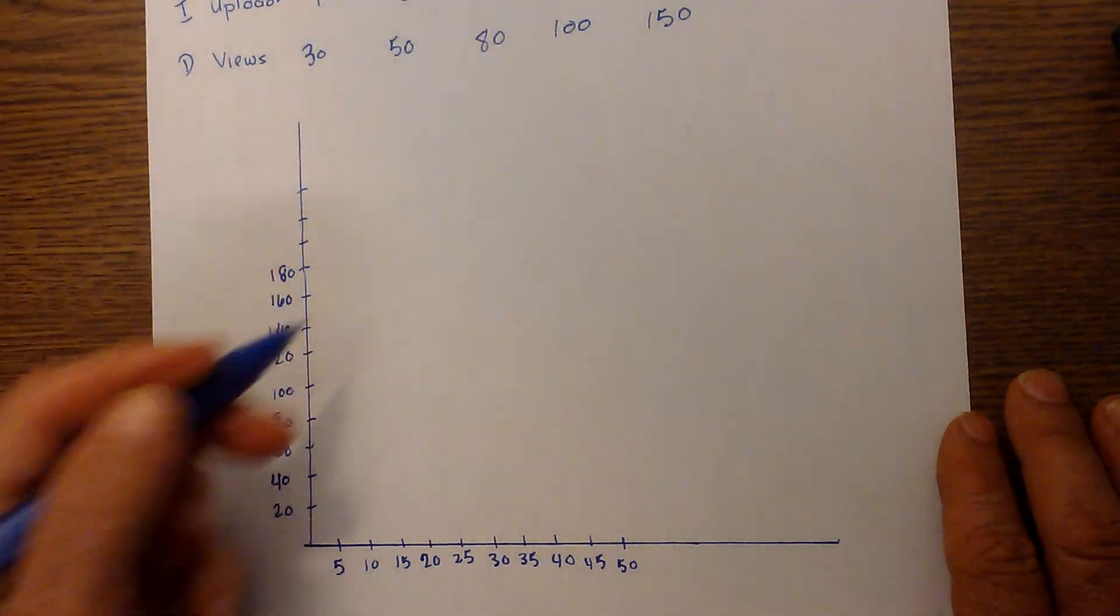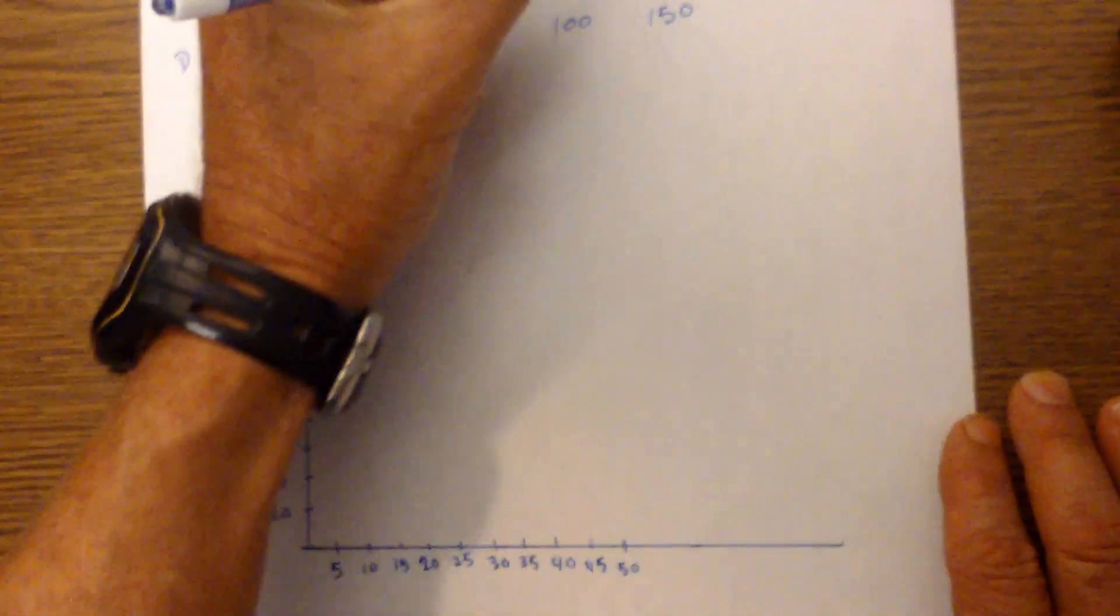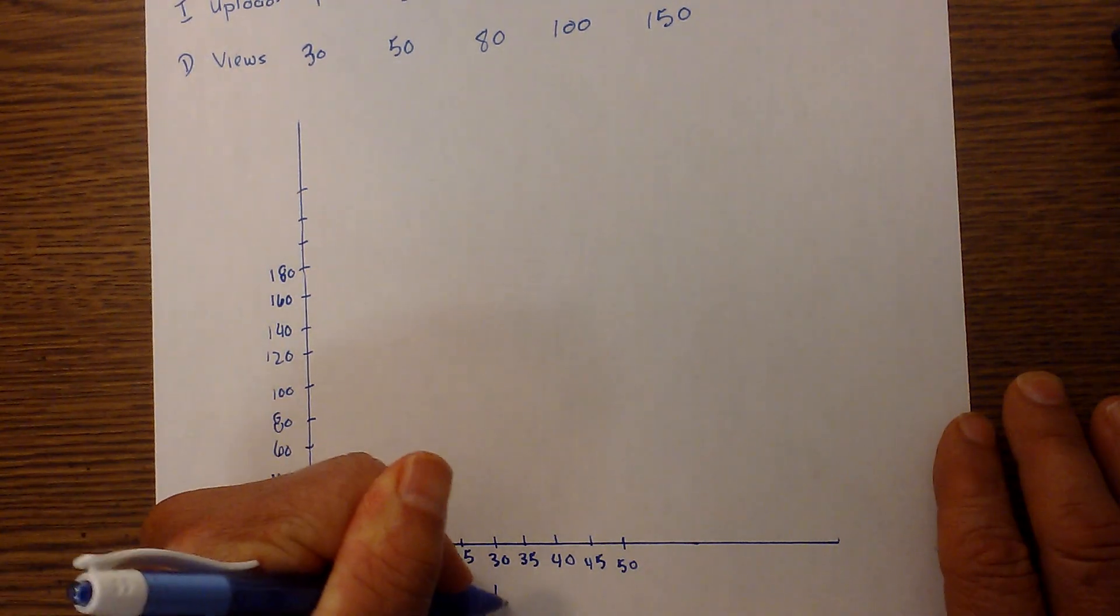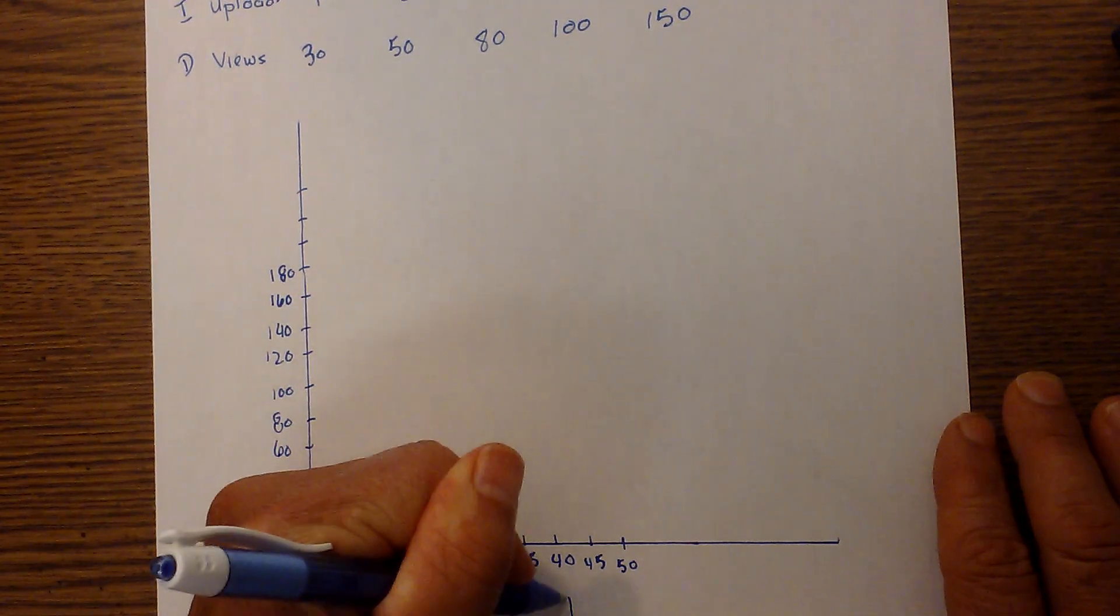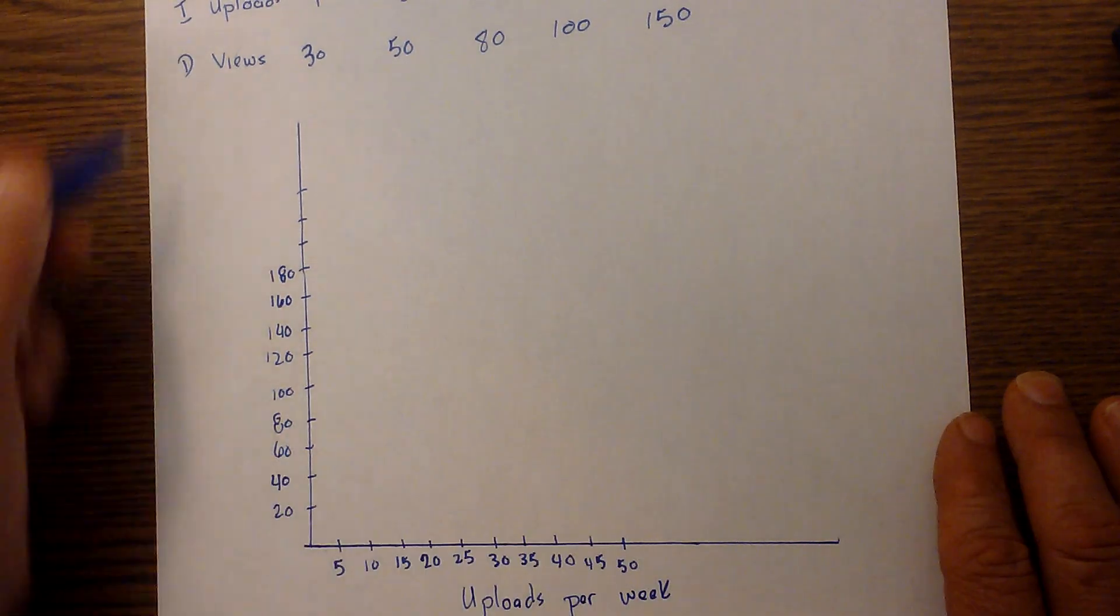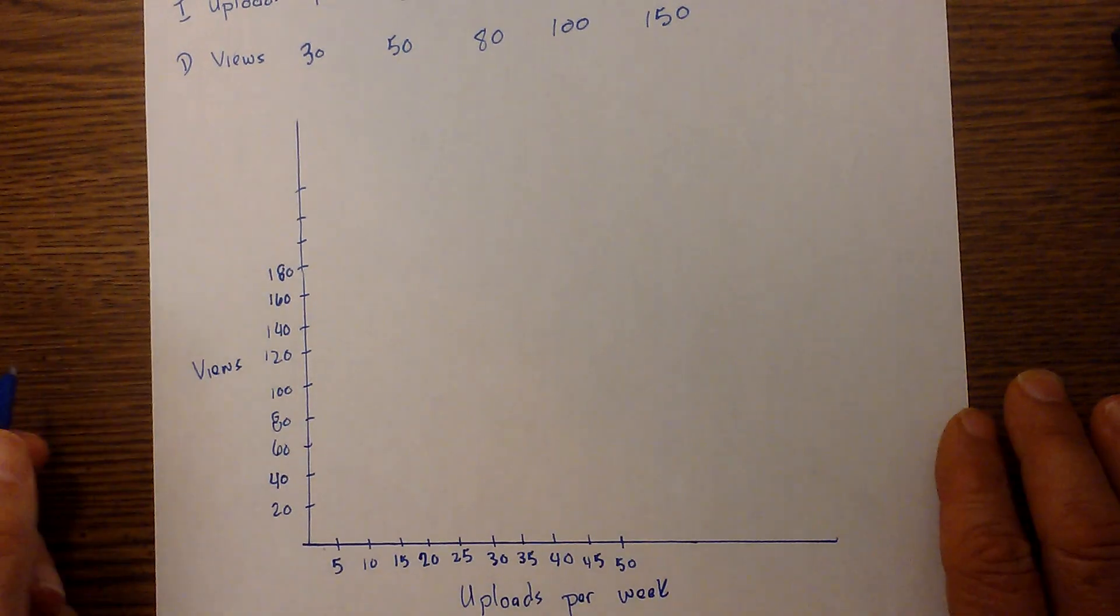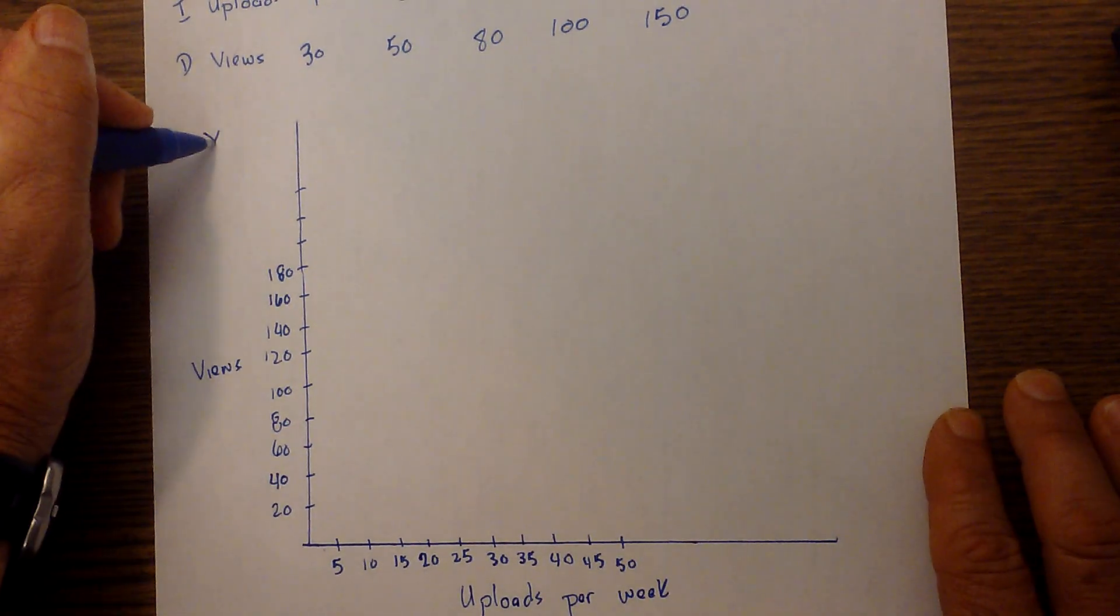The independent is DRY MIX - independent goes on the X-axis - so this will be uploads per week. Then your dependent views would go on the Y-axis.